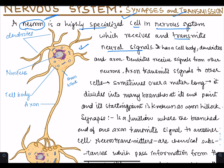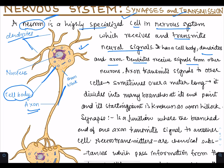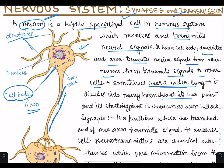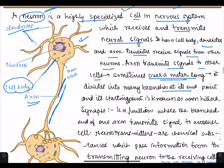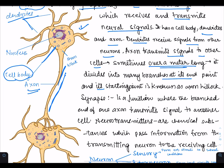It has a cell body, dendrites, and axons. These are the dendrites and this long one is the axon. Dendrites receive signals from other neurons; the axon transmits signals to other cells. Sometimes this axon can be over a meter long. It divides into many branches at the end point, and its starting point is known as the axon hillock.